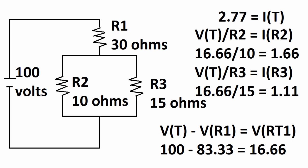Recall that in parallel, voltage remains the same. So we have voltage total 1 over resistor 2 to give us the current for resistor 2 — 16.66 over 10 equals 1.66 amps. Then voltage total 1 over resistor 3 gives us the current of resistor 3 — 16.66 over 15 equals 1.11 amps.